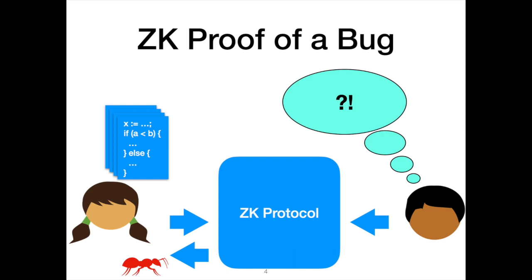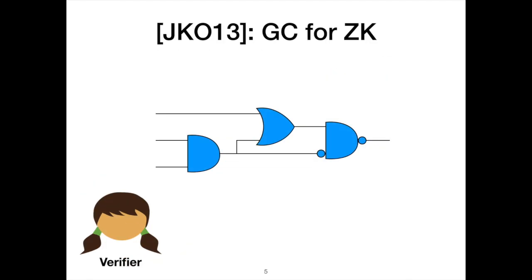This is the improvement we achieve in our work. I'll now show how we decrease communication cost when the proof statement has conditional logic. To begin, I'd like to start with the JKO protocol and therefore also with a bit of background on garbled circuits at a high level, since we extend the JKO protocol directly. Let's start with a simple circuit on the slide.